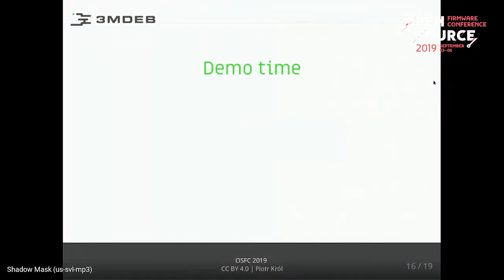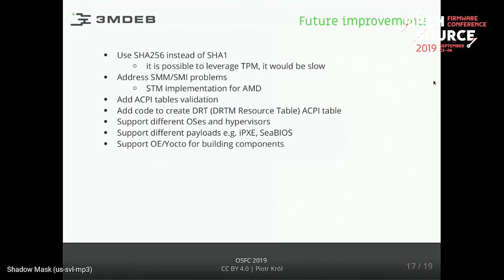That's it from the demo. What we plan to do: you saw that I only showed SHA-1 PCRs. We want to also have code that does SHA-256. Using the TPM for that would be a little problematic and slow since we have to slice everything into one-kilobyte chunks and feed the TPM. Either SHA-256 has to be implemented in the secure loader or we have to live with SHA-1, which is not ideal.